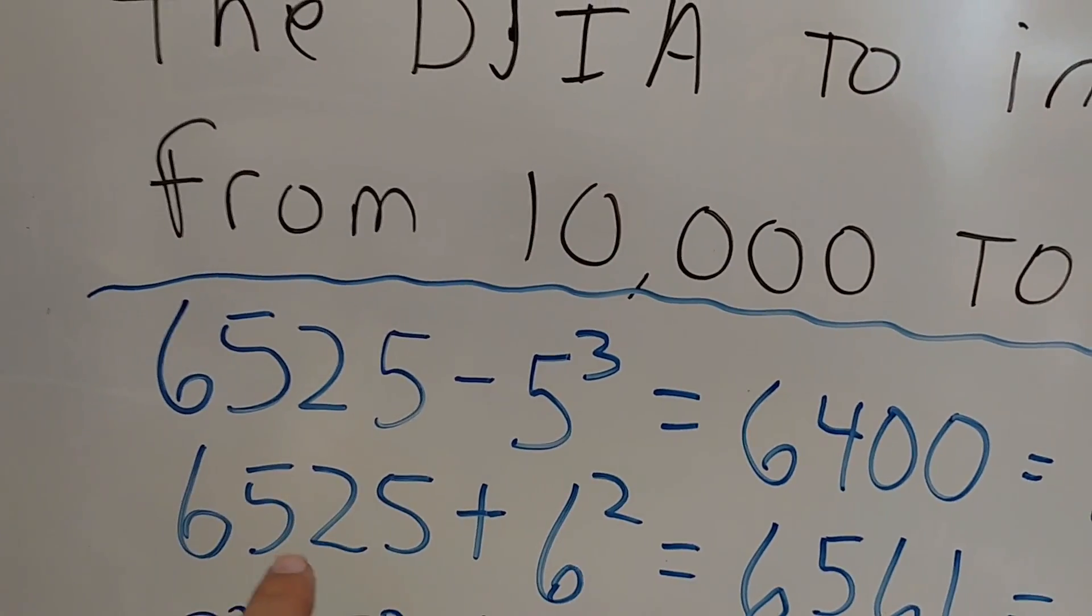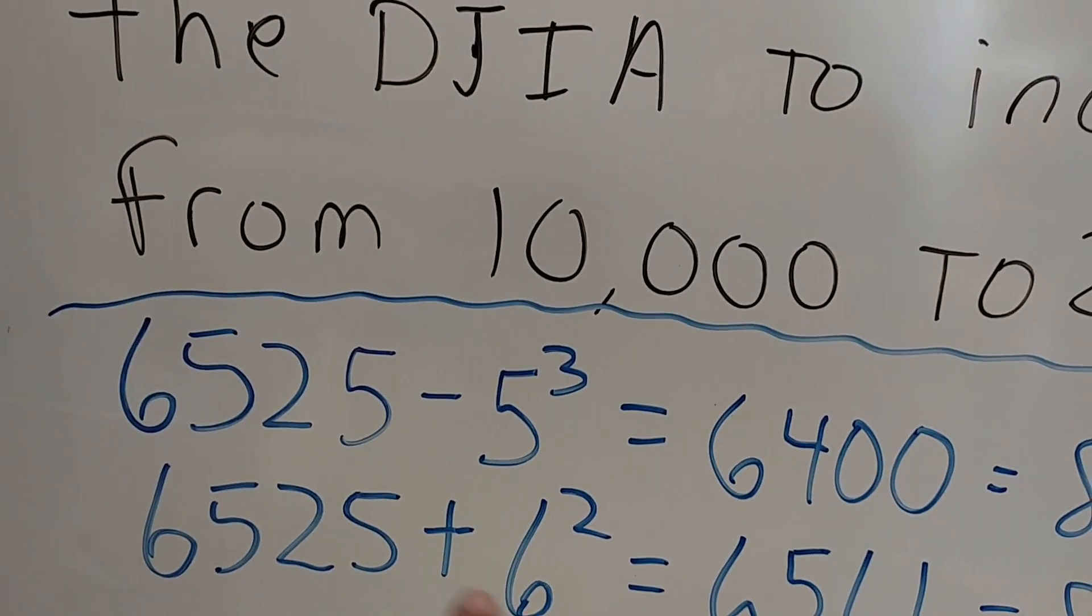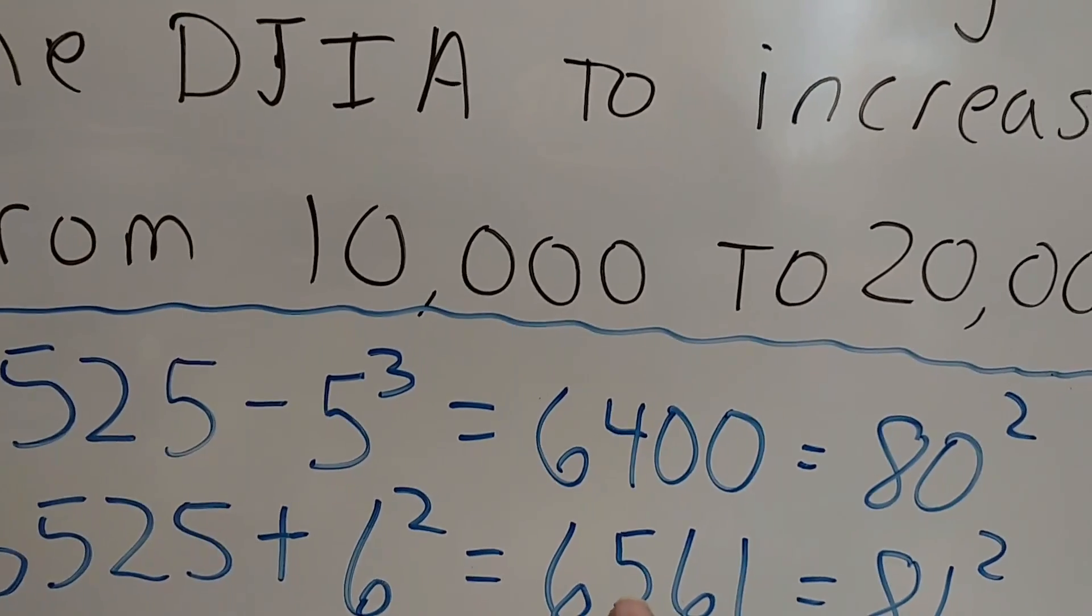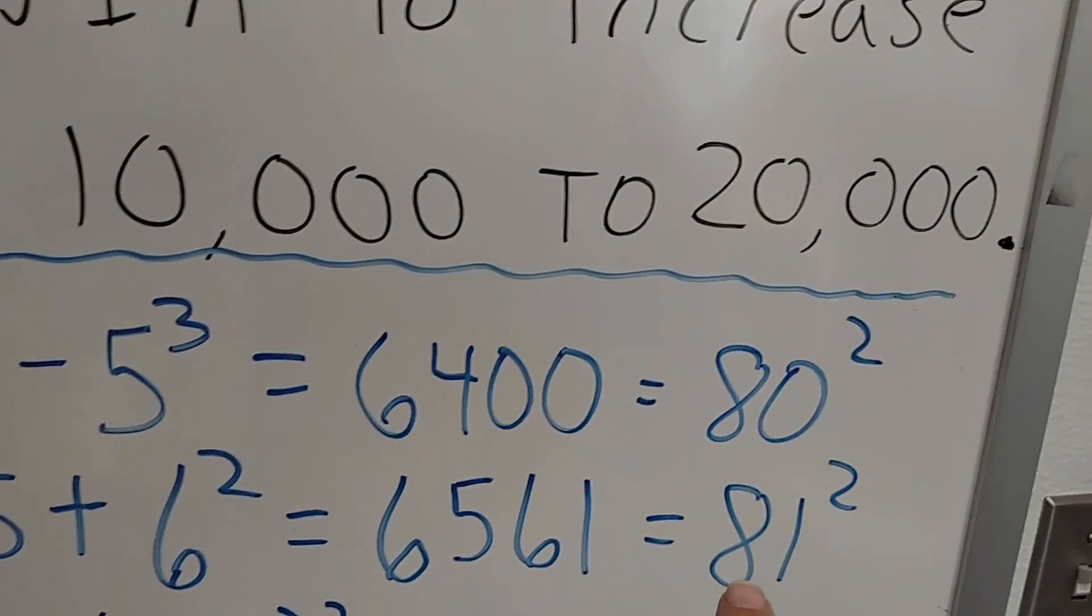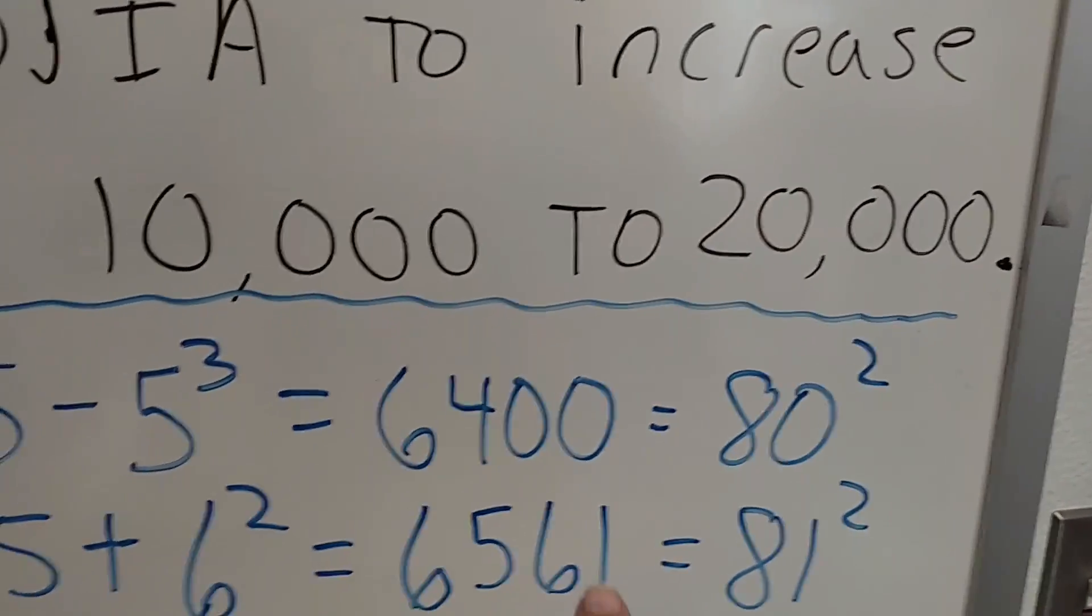If I take 6,525 and I add 6 squared, I get 6,561 which is 81 squared. I thought that was interesting.